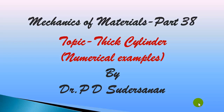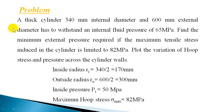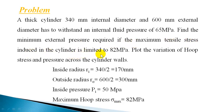Hi viewers, welcome to my class on mechanics of materials. In today's class we'll continue to work out some numerical examples on thick cylinders. Let us work out the first example. A thick cylinder of 340 mm internal diameter and 600 mm external diameter has to withstand an internal fluid pressure of 65 MPa.